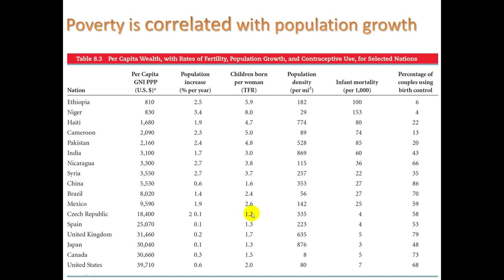Let's contrast that with the U.S. down here at the bottom. Average income $39,000, and population increase 0.6. TFR of 2.0, pretty close to the replacement fertility rate of 2.1. Infant mortality rate: 7, which is still strikingly high for the U.S. And percentages of couples using birth control: 68%.